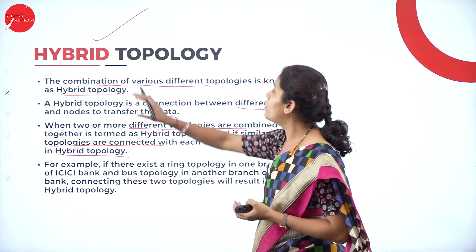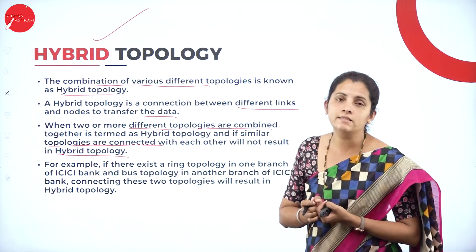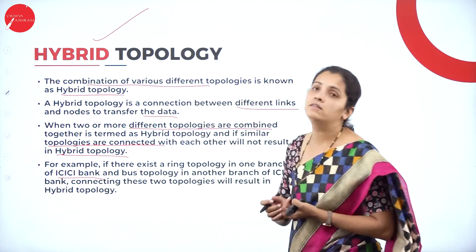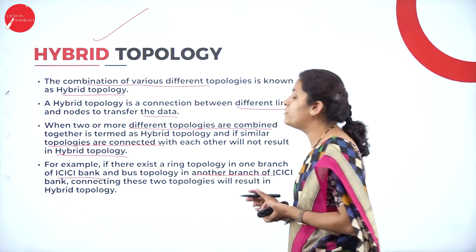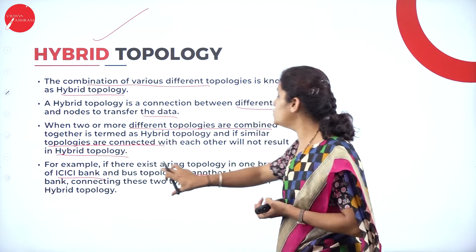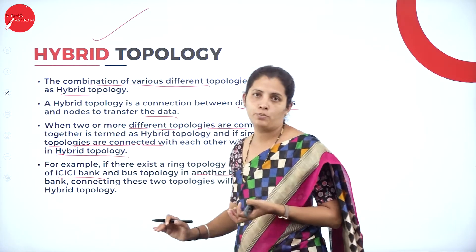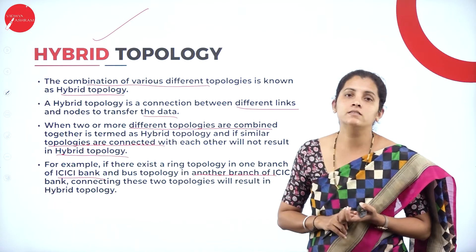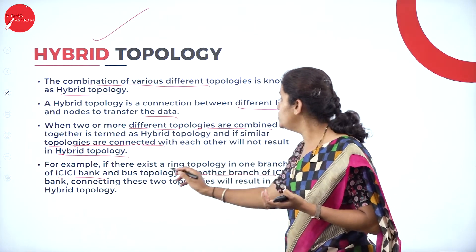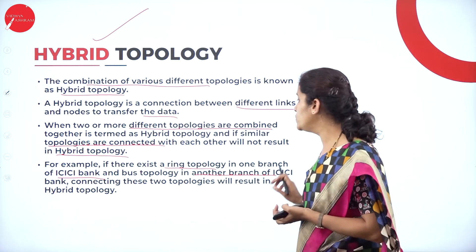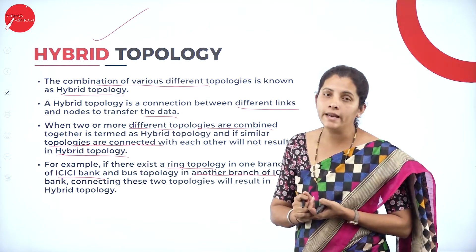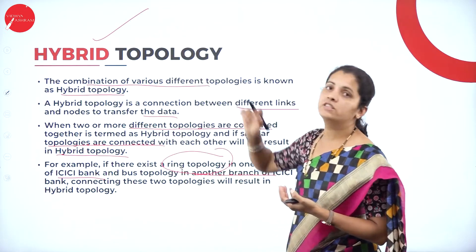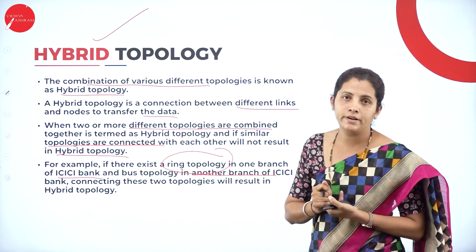The best example for hybrid topology is: think that there exists a ring topology in one branch of ICICI bank and a bus topology in another branch of ICICI bank. Connecting these two topologies will result in hybrid topology. Hybrid topology is nothing but a combination of different topologies.